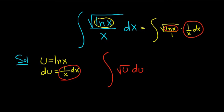When we have the square root of u, we can write it as u to a power. In particular, the square root can be written as u to the 1/2. So this is u to the 1/2 du.